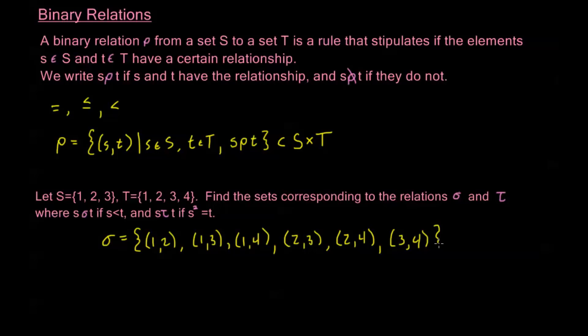Right, these are all of my ordered pairs (s,t) where s is less than t. I've taken all possible ordered pairs for my cross product S×T where this restriction is satisfied, or where this relationship is satisfied.